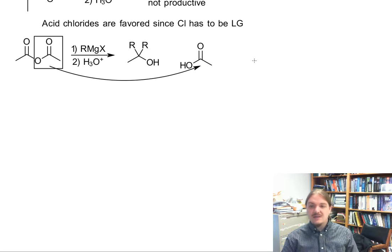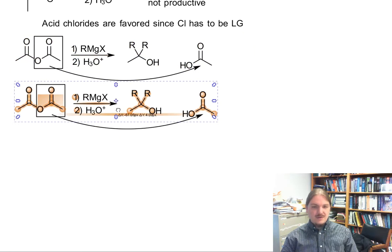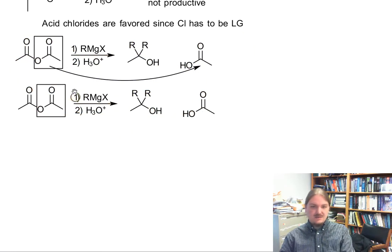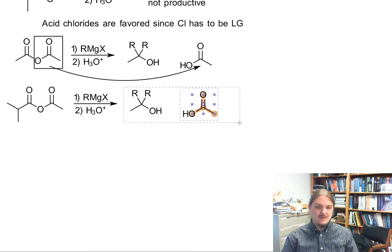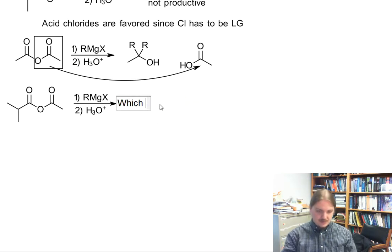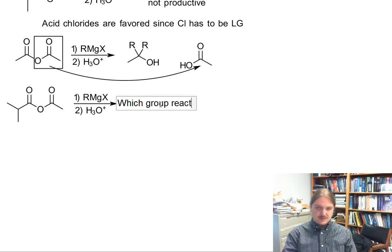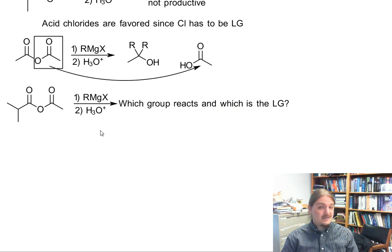The Grignard reaction here is, again, not a particularly productive reaction. If we do the non-symmetric version, we have now two different carbonyl groups. Which one group that reacts and which one is the leaving group is a question that's really hard to answer.